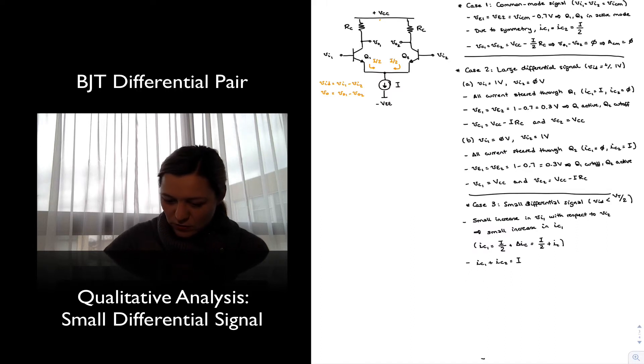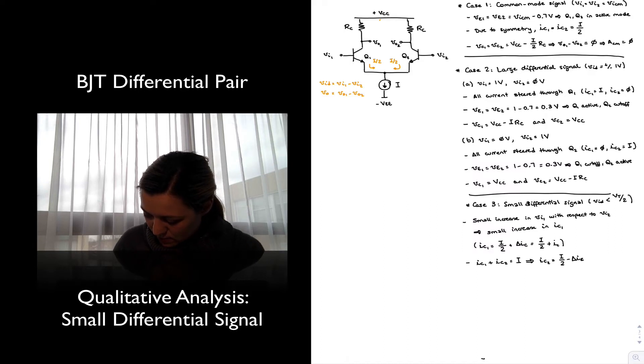And so we have, as part of the same line, since it's a direct consequence, therefore I_C2 must be equal to the I/2 minus the same delta I_C, which is I/2 minus small signal i_c.